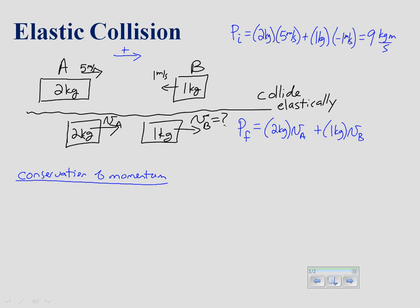From conservation of momentum, setting initial momentum equal to final momentum, we have: 9 = 2 kg × VA + 1 kg × VB. Looking at this, there's not enough information to solve it yet — there are two unknowns, the velocity of object A and the velocity of object B after the collision.